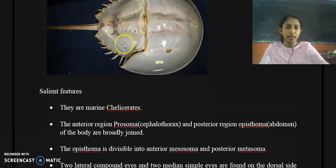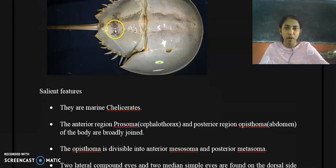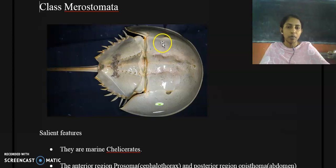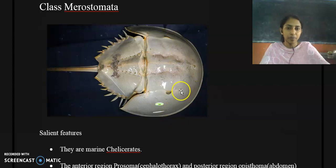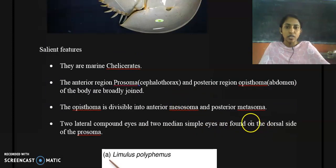The abdominal area is divided into two parts: the anterior part called the mesosoma and the posterior part called the metasoma. Members of Class Merostomata also possess two lateral compound eyes and two median simple eyes. The median eye and lateral eyes are located in the carapace or cephalothoracic region, and the lateral eyes are found on the dorsal side of the prosoma.